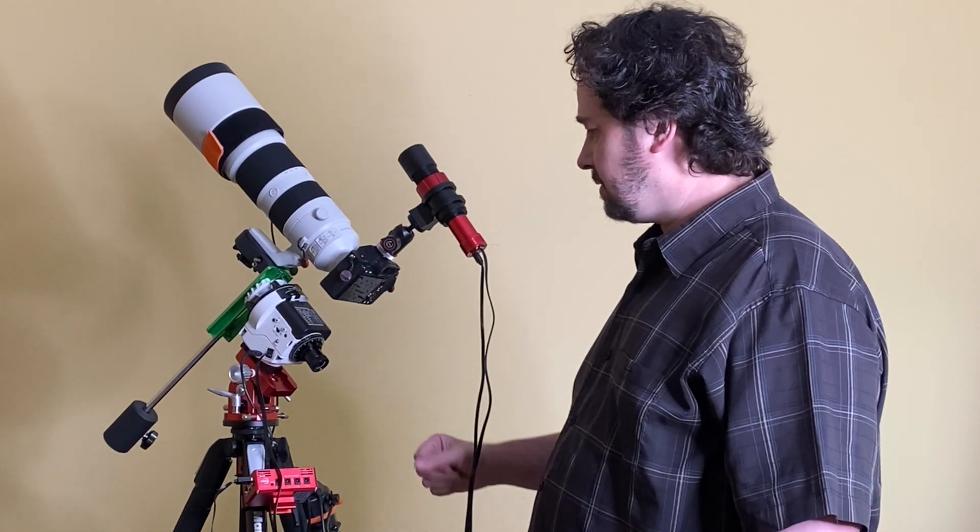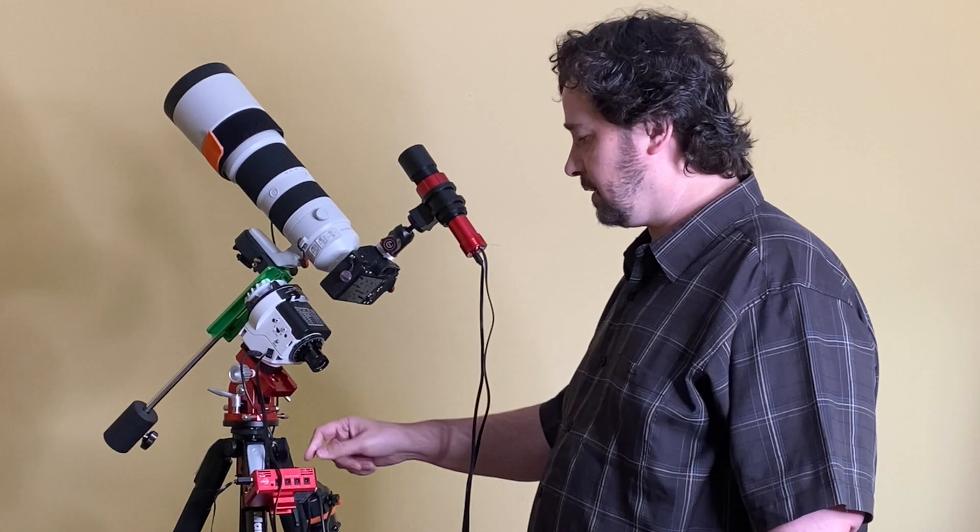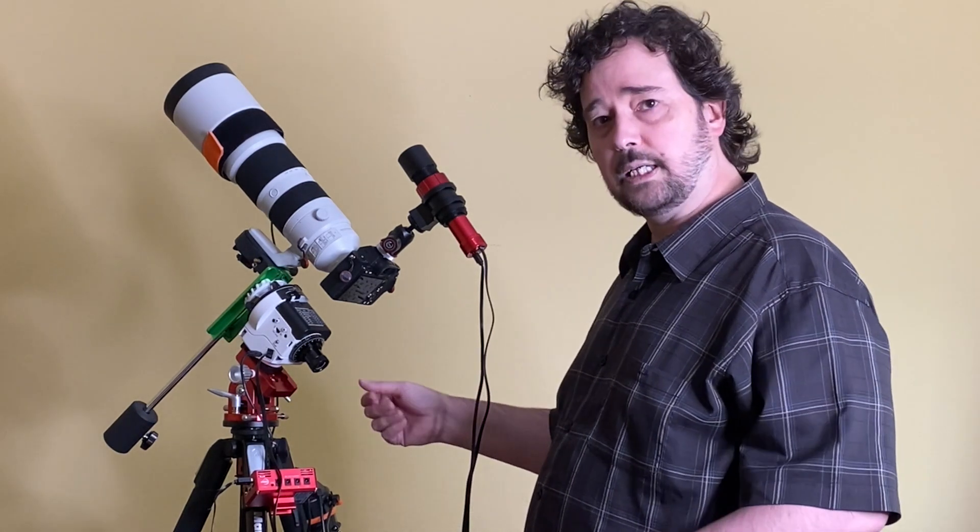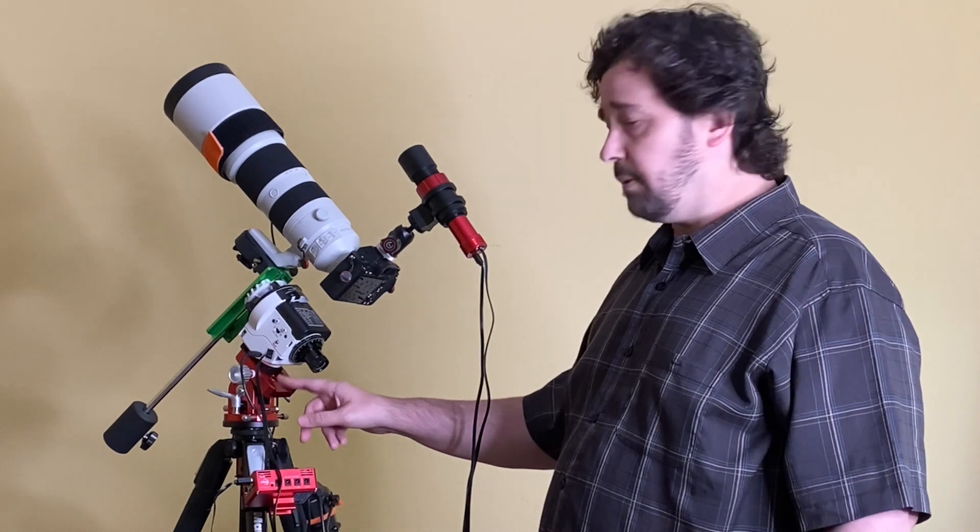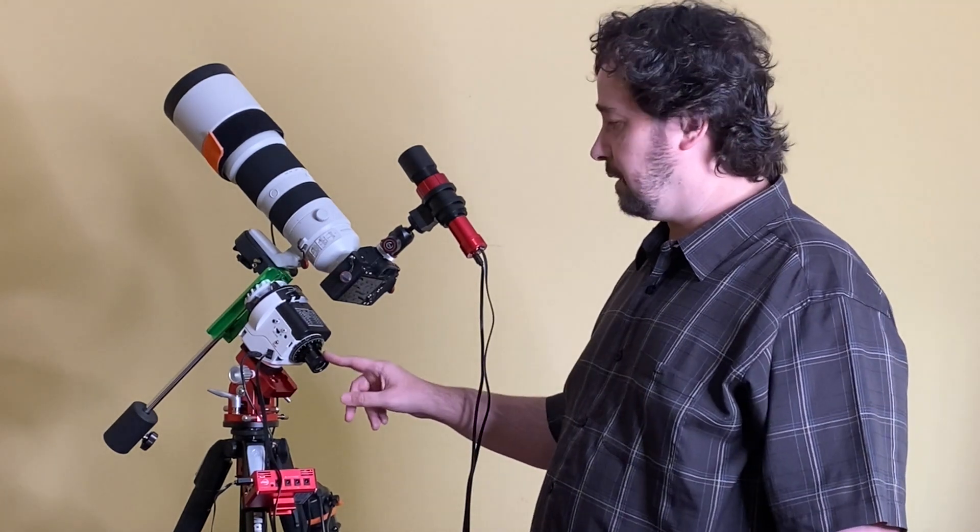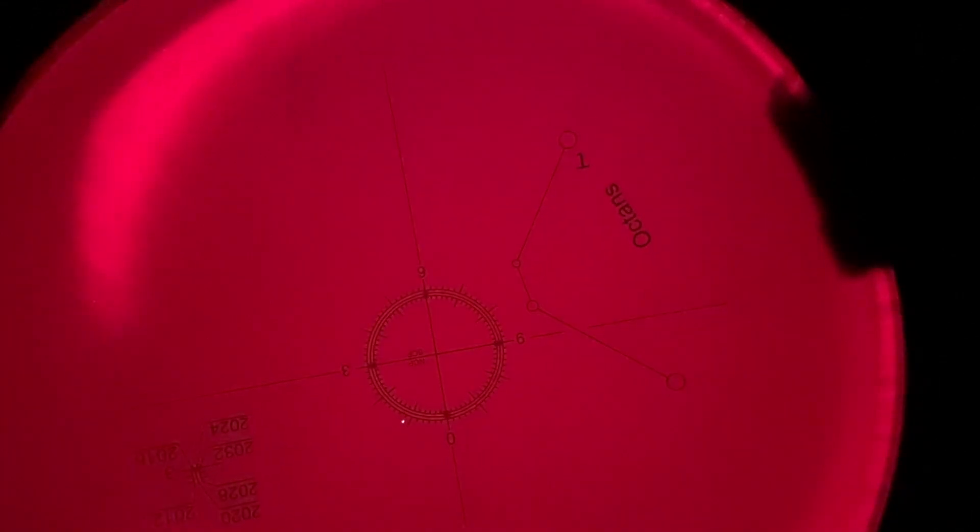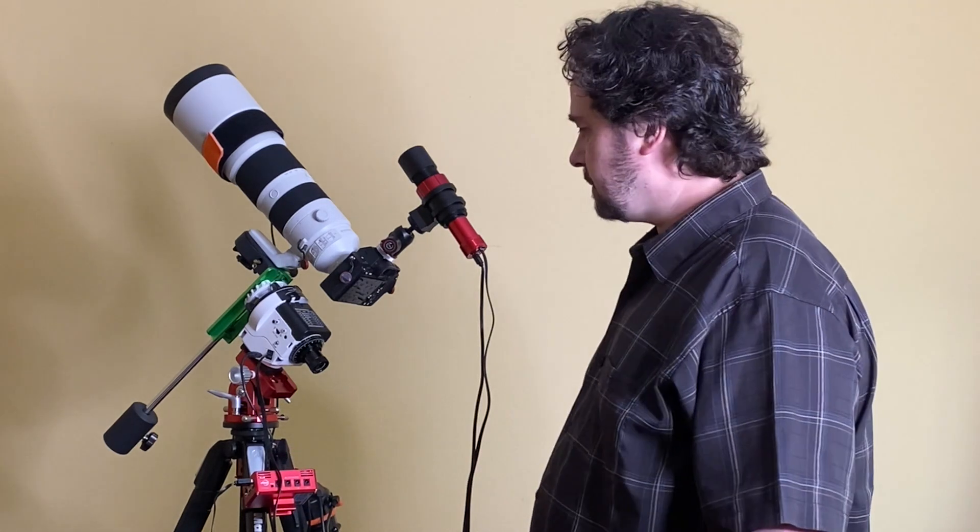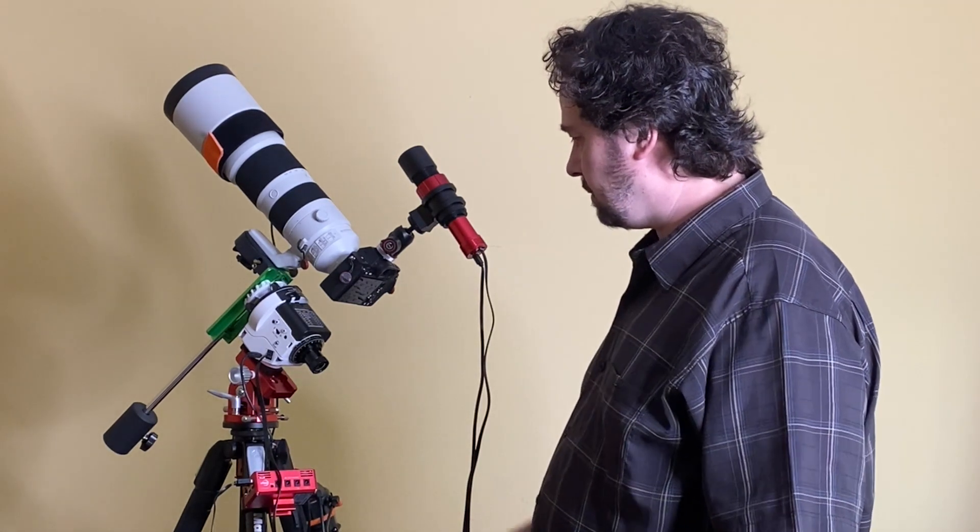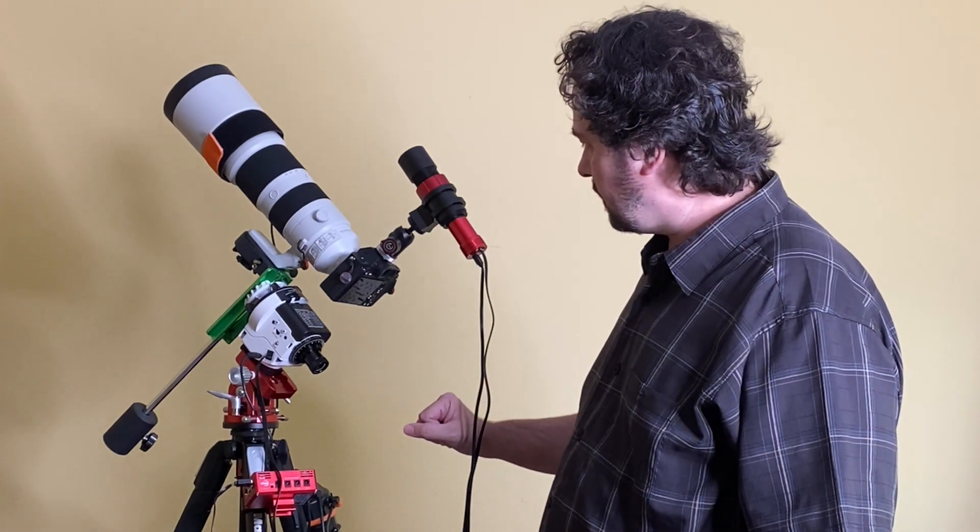So this thing will take a couple images and it'll tell you how far you are off, and then you can make small adjustments, take another picture, and keep doing that until you've refined the polar alignment to much more accurate than you could do optically through this viewfinder. So you still kind of set it up by hand optically, visually as close as you can, but then you make fine adjustments with this, far beyond what you could do by eyeballing it.